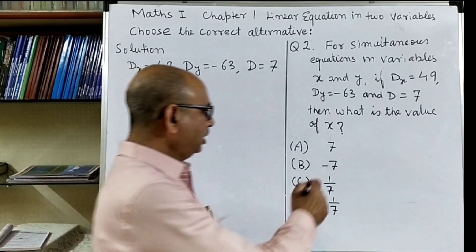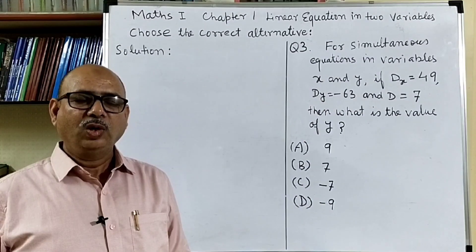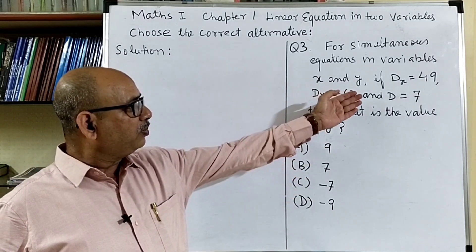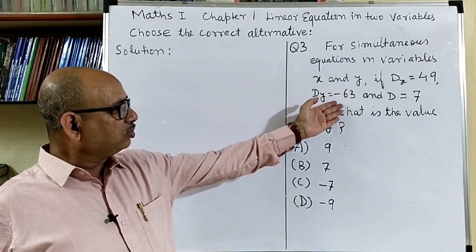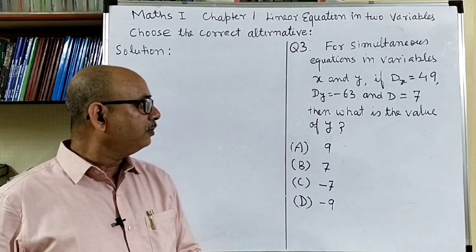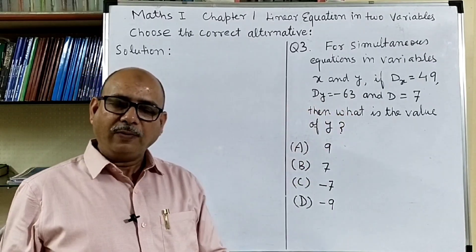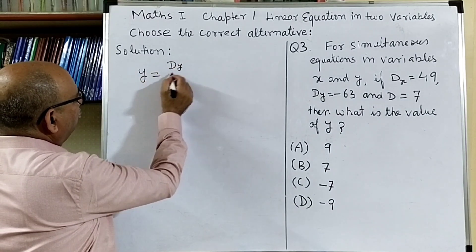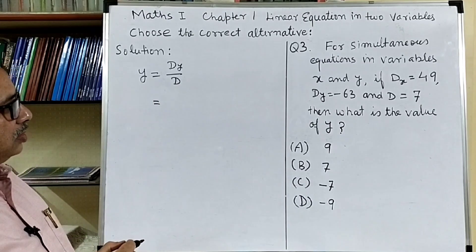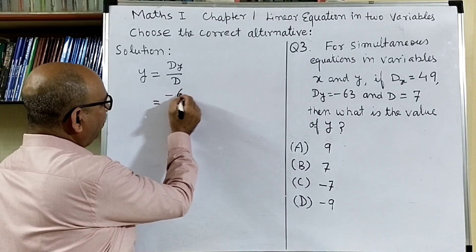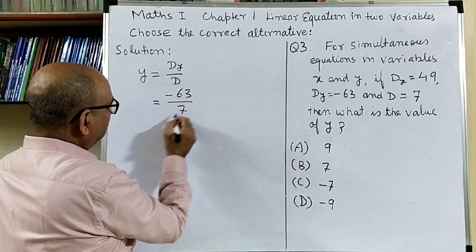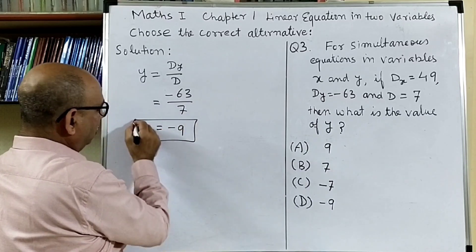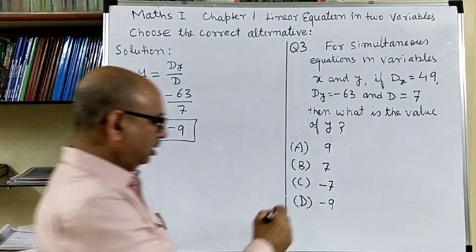Question number three: for simultaneous equations in variables x and y, if Dx is equal to 49, Dy is equal to minus 63, and D is equal to 7, then what is the value of y? We know that y is equal to Dy divided by D. Dy is minus 63 and D is 7, so y is equal to minus 9. The correct option is D.